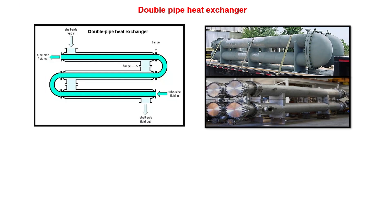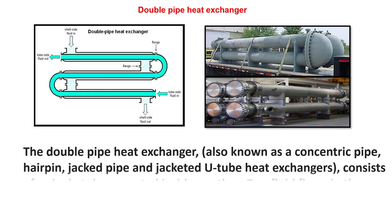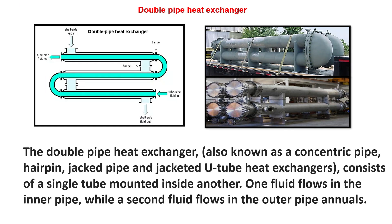Double pipe heat exchanger: The double pipe heat exchanger, also known as concentric pipe, hairpin pipe, and jacketed tube heat exchanger, consists of a single tube mounted inside another. One fluid flows in the inner pipe while a second fluid flows in the outer pipe envelope.